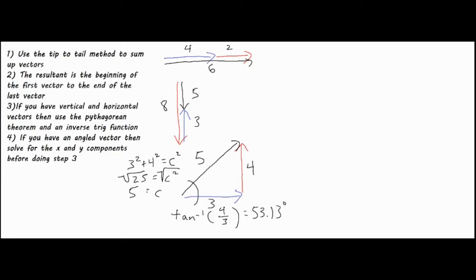In addition to the angle, you may want to use a directional notation such as 53.13 degrees north of east. Directly east would be this direction, and we're tilting upwards towards the northern end — which is up towards the top of the screen. So that's tilted 53.13 degrees north of east.